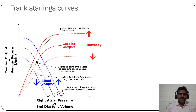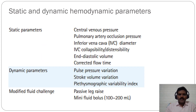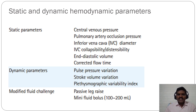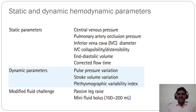There are static and dynamic hemodynamic parameters that tell you about fluid status. The main aim is to determine whether the patient will respond to additional fluids, not respond, or develop complications. Static measures include central venous pressure, pulmonary arterial occlusion pressure, inferior vena caval diameter, IVC collapsibility and distensibility index, and diastolic volume. Dynamic parameters — which are very important — include pulse pressure variation, stroke volume variation, plethysmographic variability index, and modified fluid challenge in the form of passive leg raising test or mini fluid boluses.